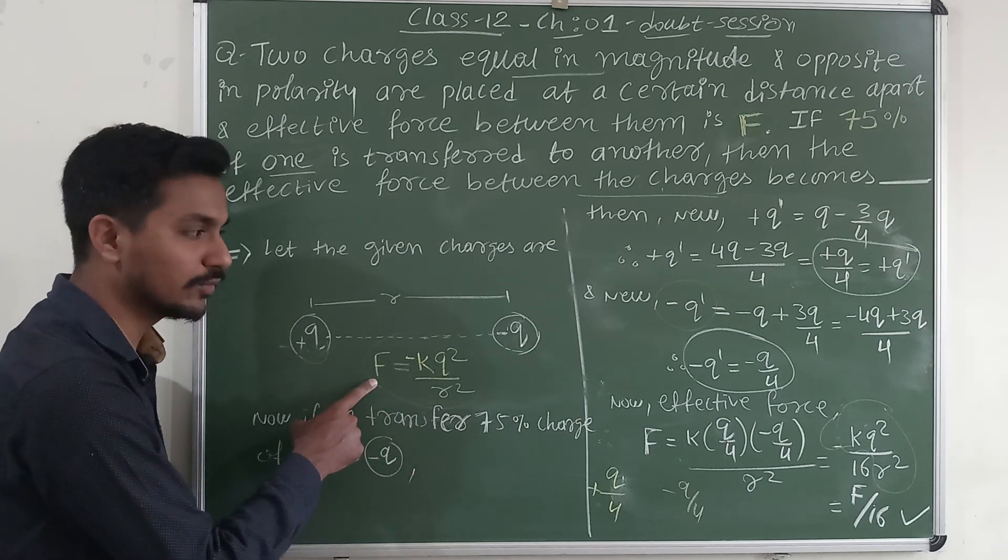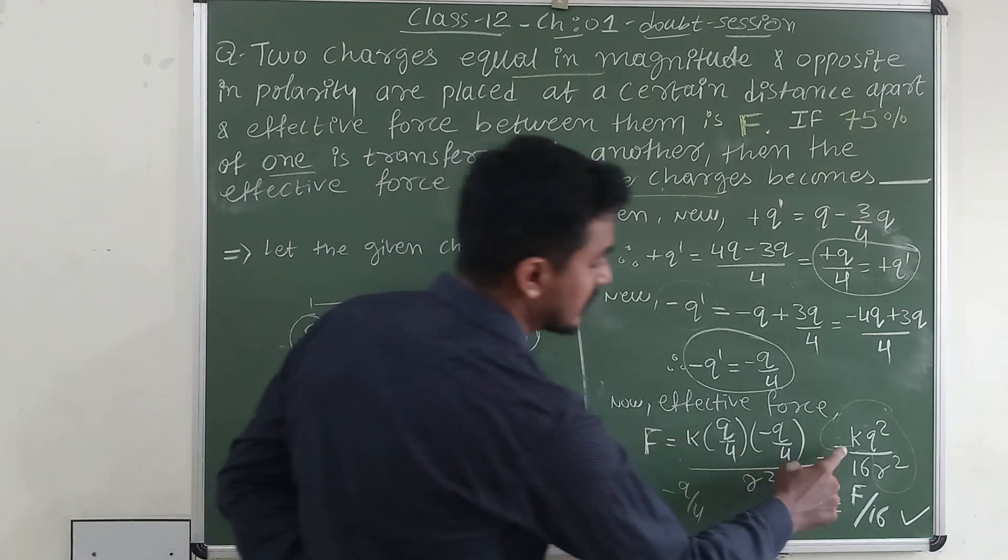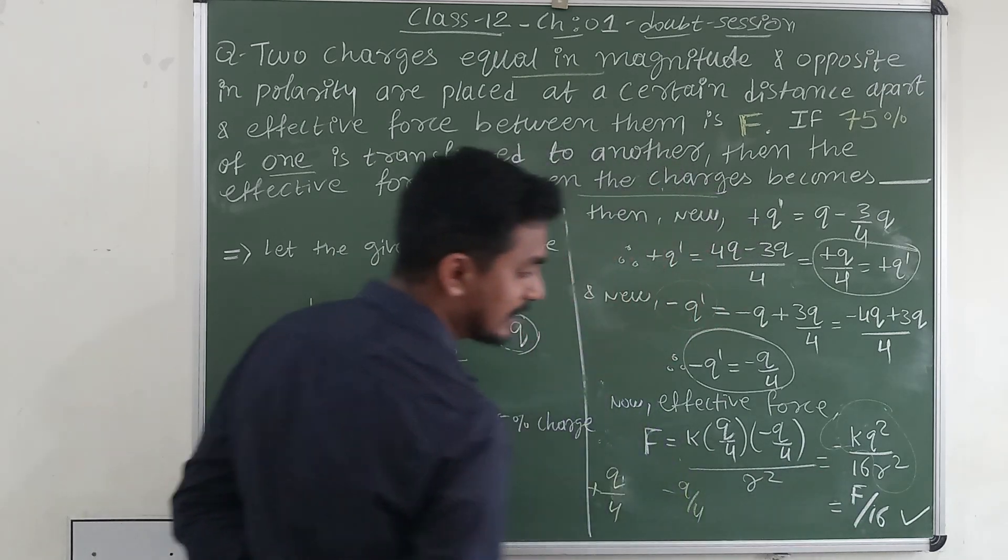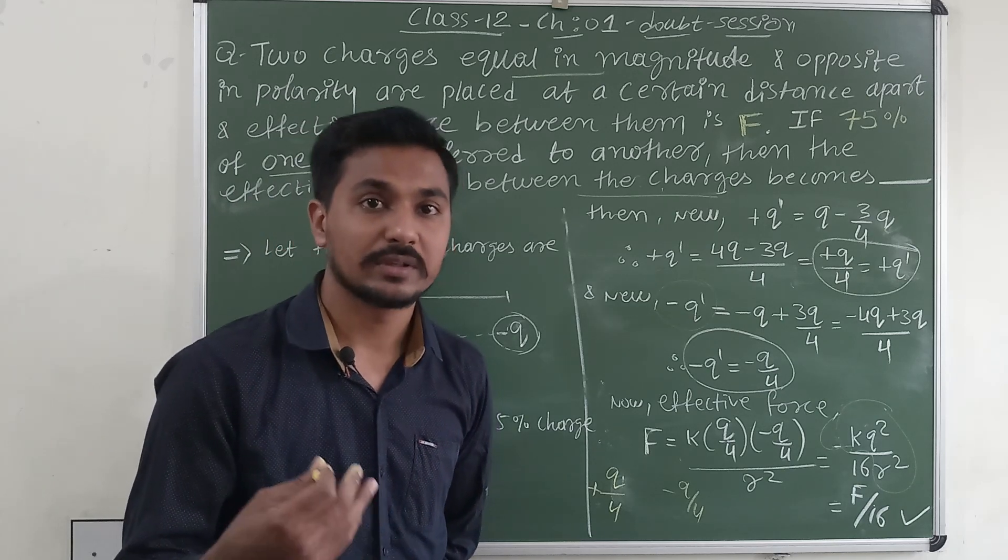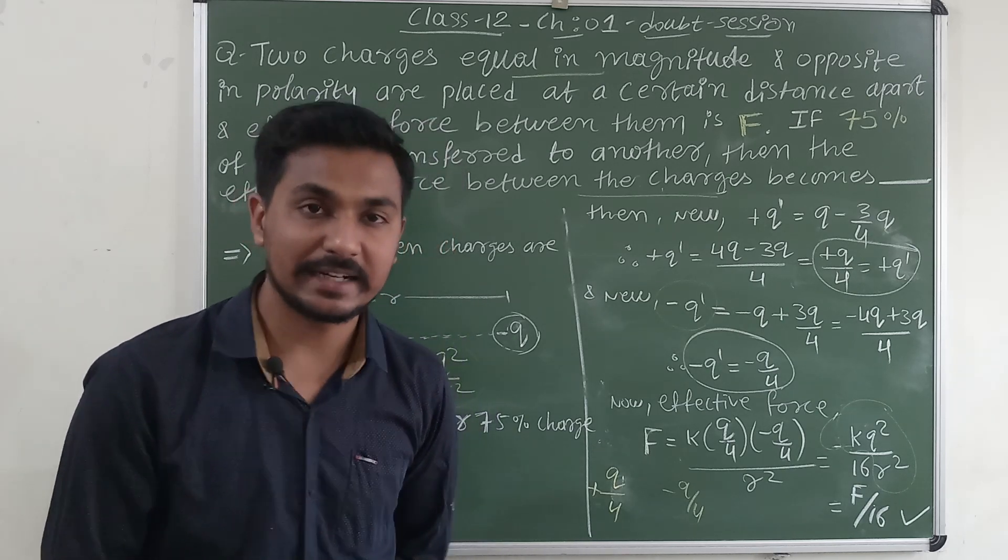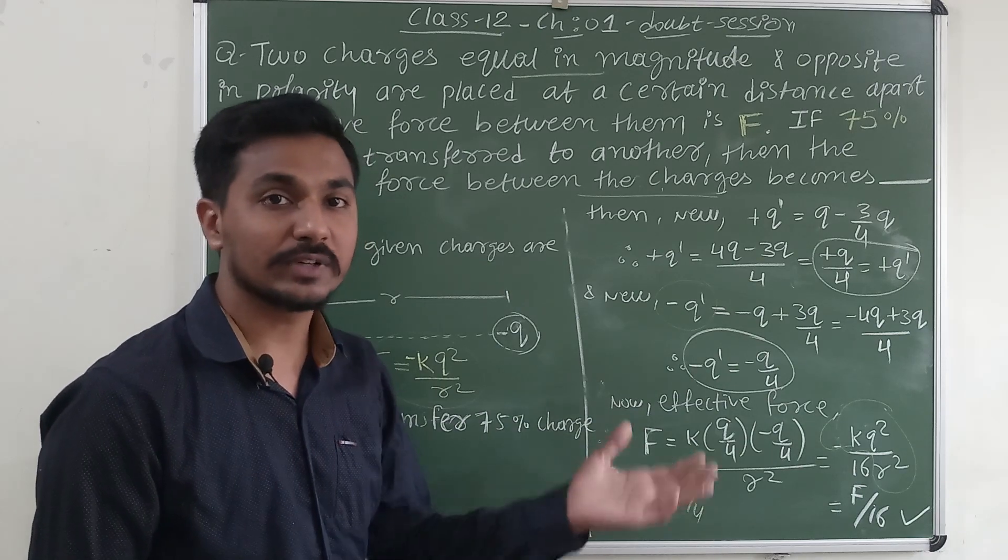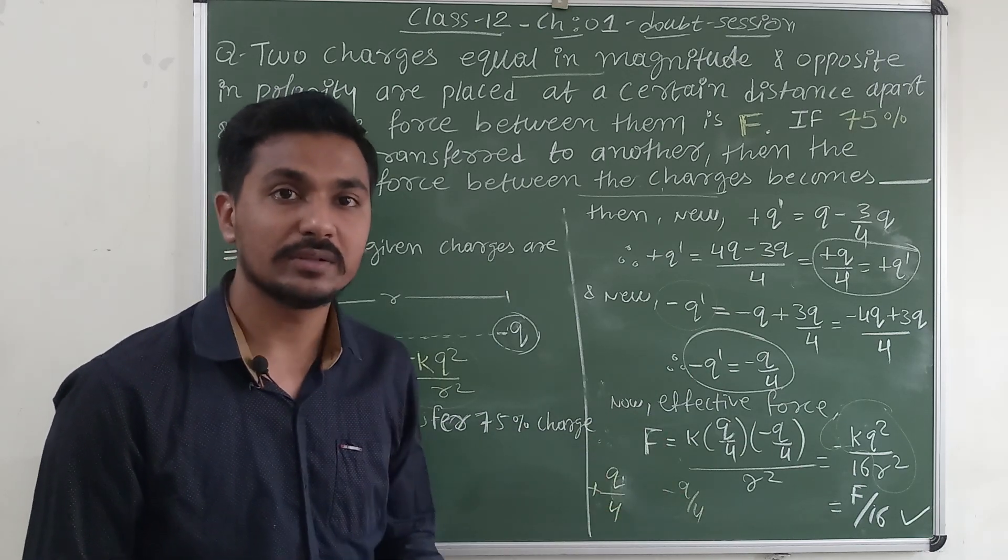We substitute here, so it is F by 16. The original force will reduce by 16 times. That is the new force we will get, it is the 1 by 16th of the original force.